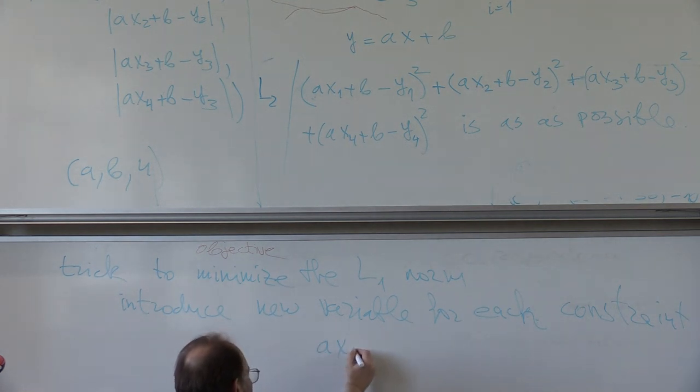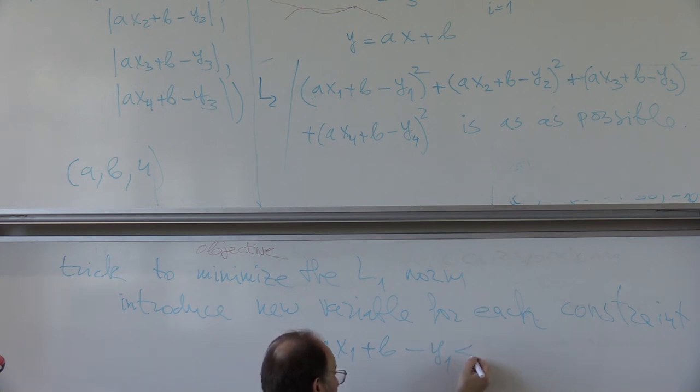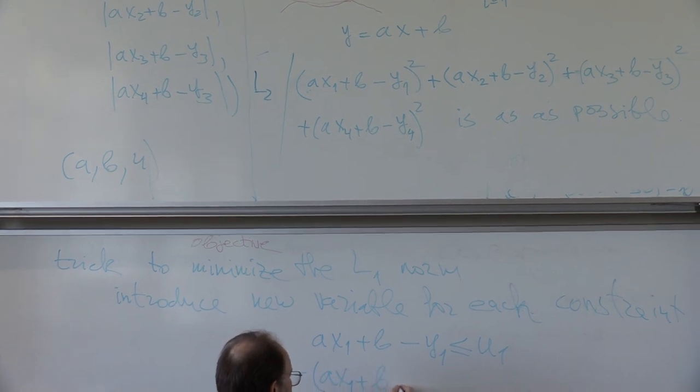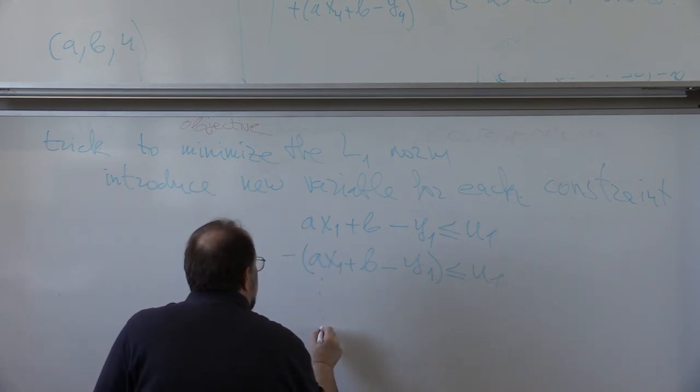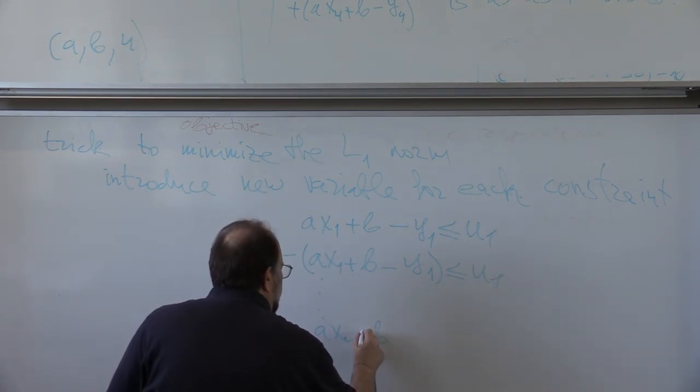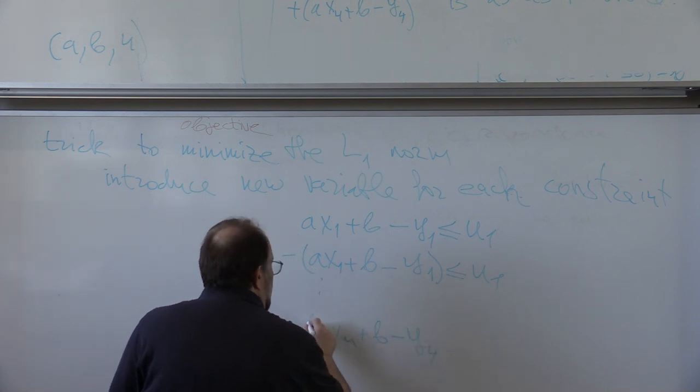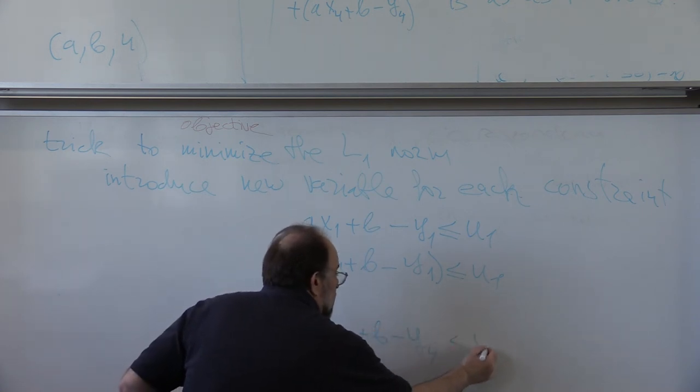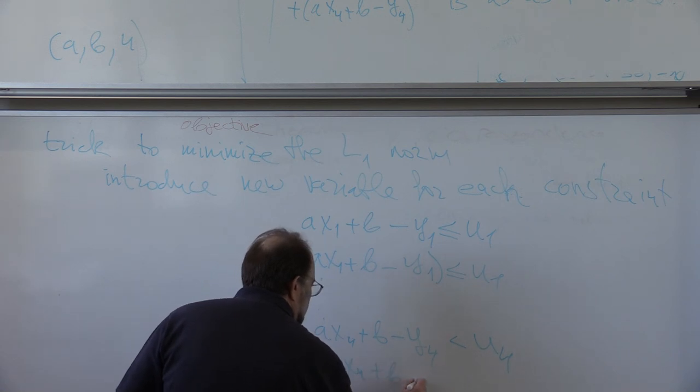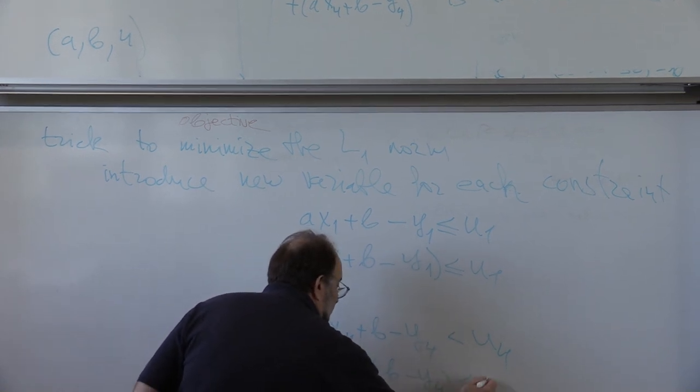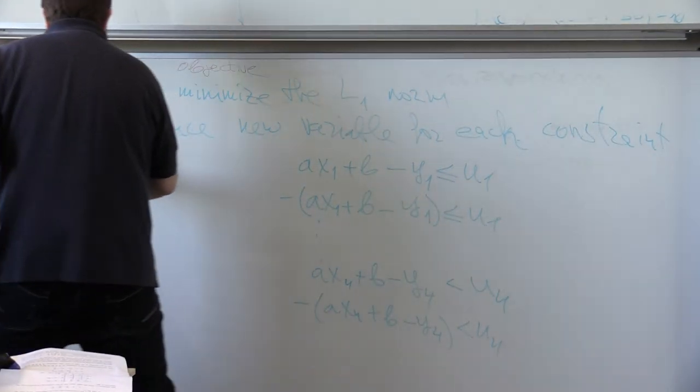And you will have the following. A x1 plus b minus y1, smaller or equal than u1. And also, minus a x1 plus b minus y1, smaller than u1. And all the way, a x4 plus b minus y4, smaller than u4. And minus this, a x4 plus b minus y4, smaller than u4. And then you will minimize what? What do you think?